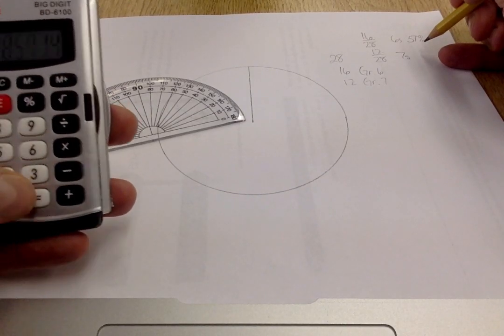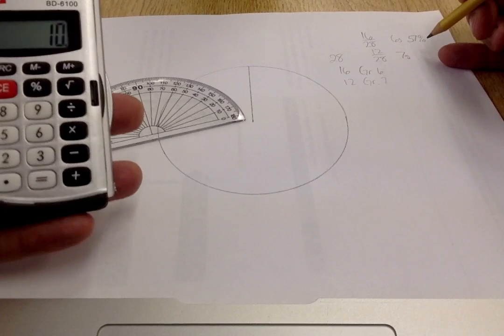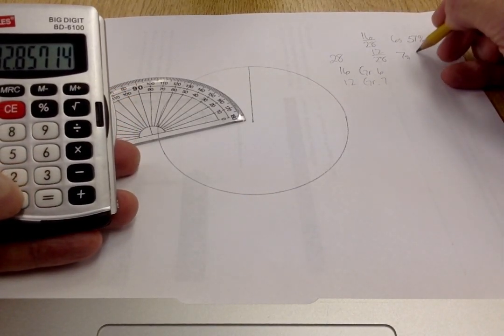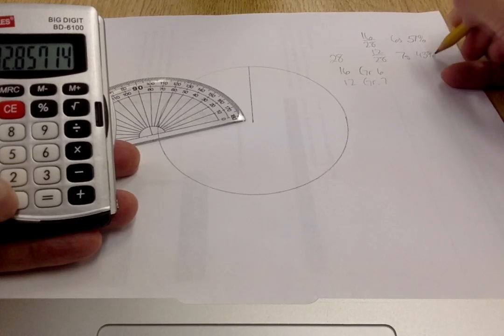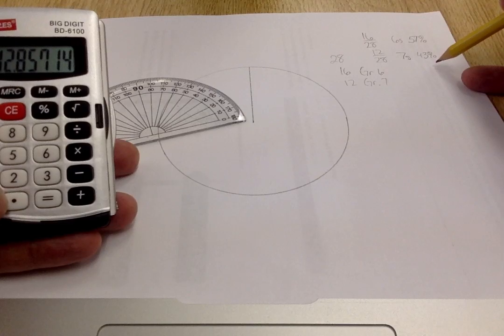I'll do 12 divided by 28 equals 42.8 times 100. I'm going to round this off from 42.8 to 43%. So there are my percents for the grade 6's and the grade 7's.